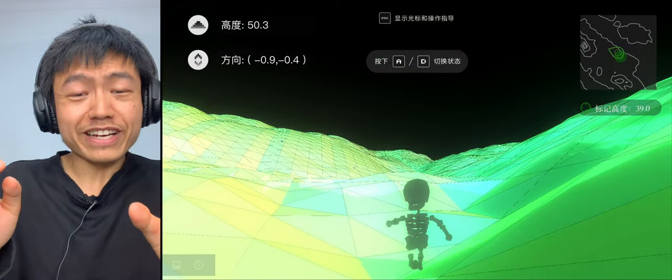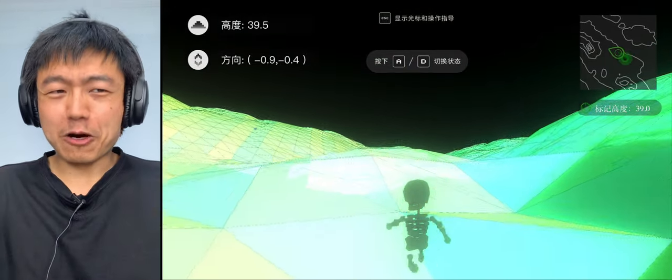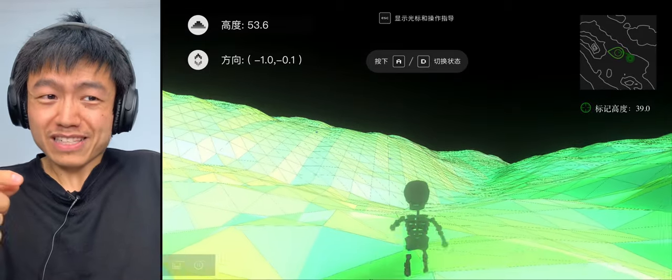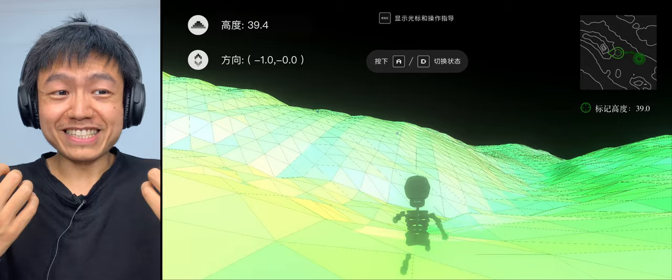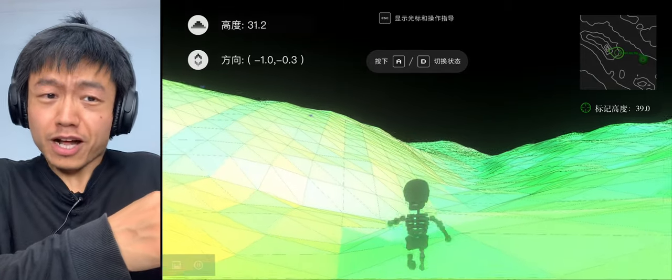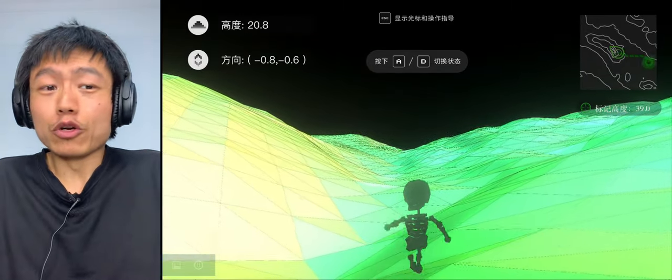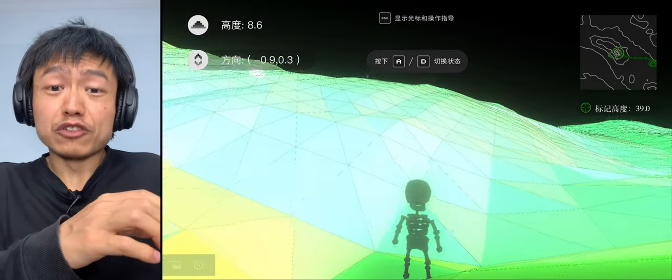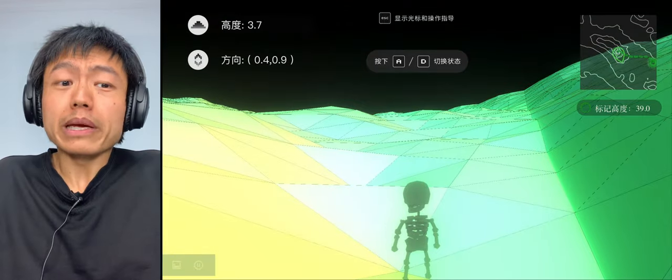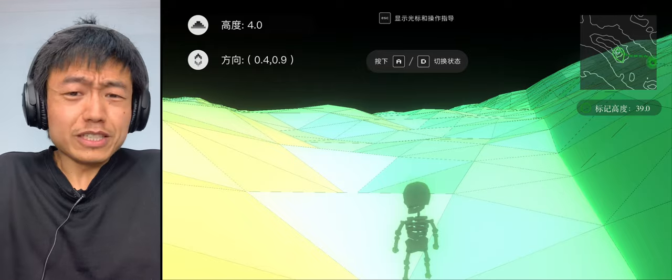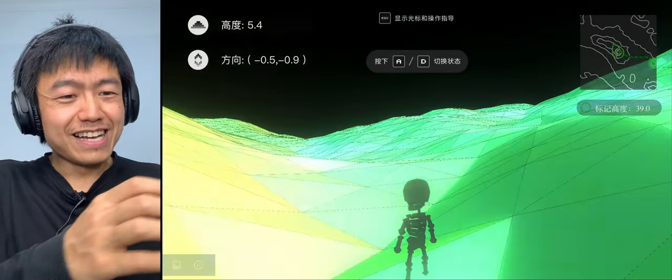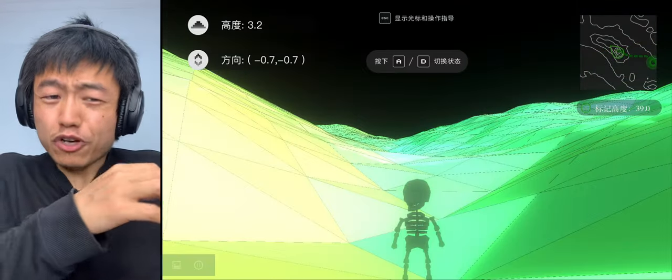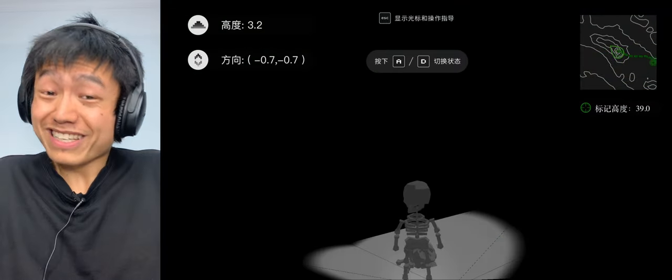The height we just recorded is 39. Now let's find the lower place according to the topographic map. As a human being, I can only control the avatar to run around and keep trying and looking. Without the aid of numerical values and topographic maps, we need to spend a lot of time. In the following content, let's watch how to let the robot find the lowest point on its own.